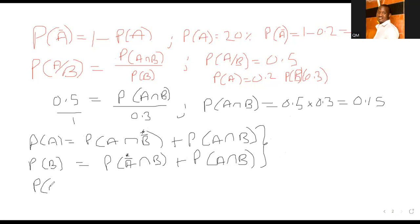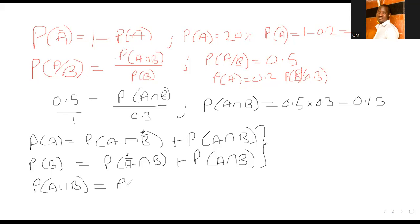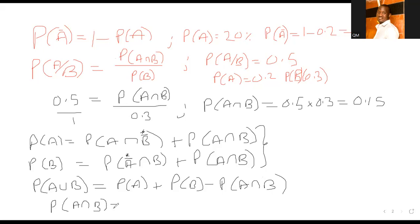We also discussed the union set — remember the formula for A union B. The probability of A union B equals probability of A plus probability of B minus the intersection of A and B. When we make the intersection the subject, P(A∩B) = P(A) + P(B) minus P(A∪B).